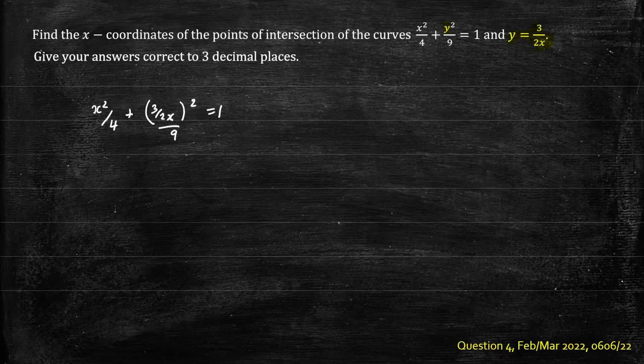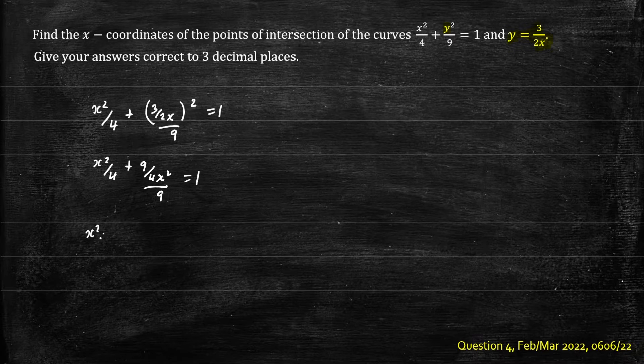So now we've eliminated y. That will give us x squared on 4 plus 9 on 4 x squared divided by 9 equals 1. So we'll have x squared on 4 plus 9 on 4 x squared times 1 on 9 equals 1.